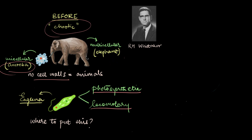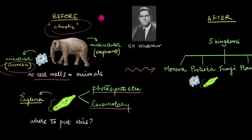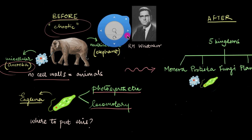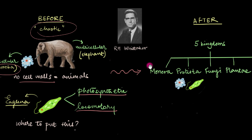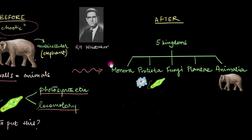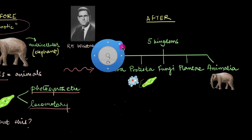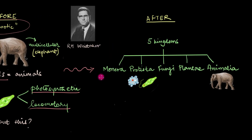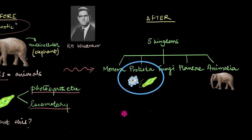That is, until the Five Kingdom classification system. Whittaker's Five Kingdom classification system actually gave these animals — the amoebas and the euglenas — a home of their own, and that is Kingdom Protista.